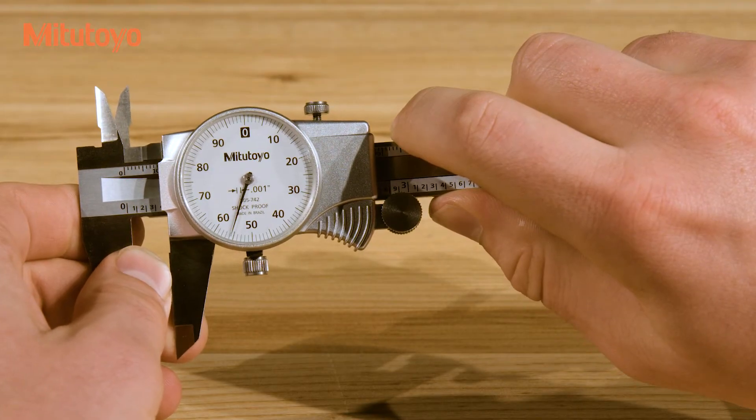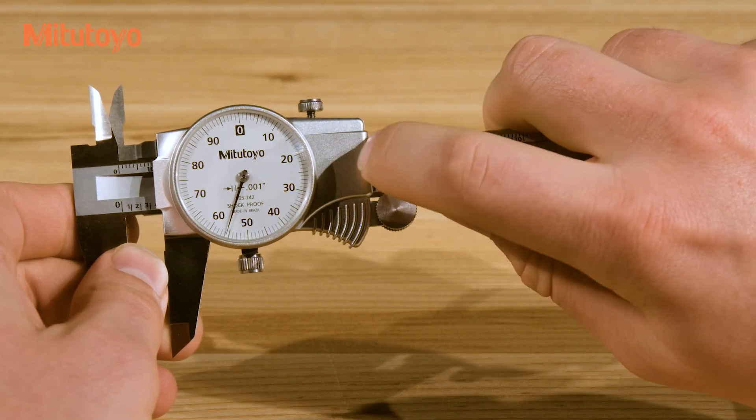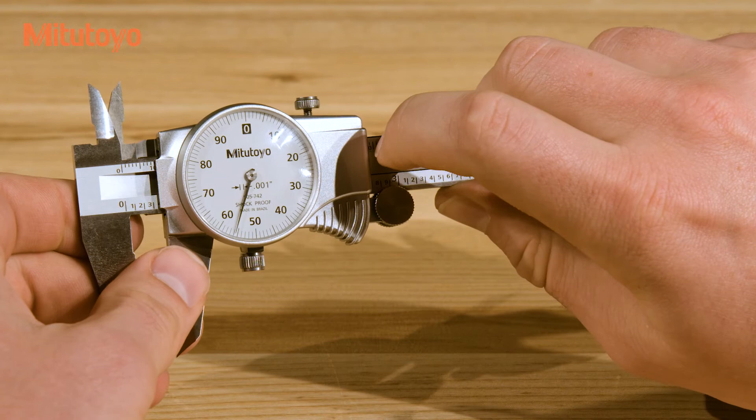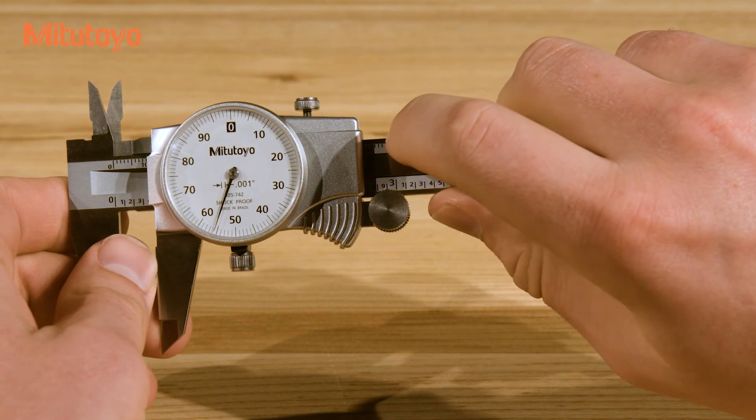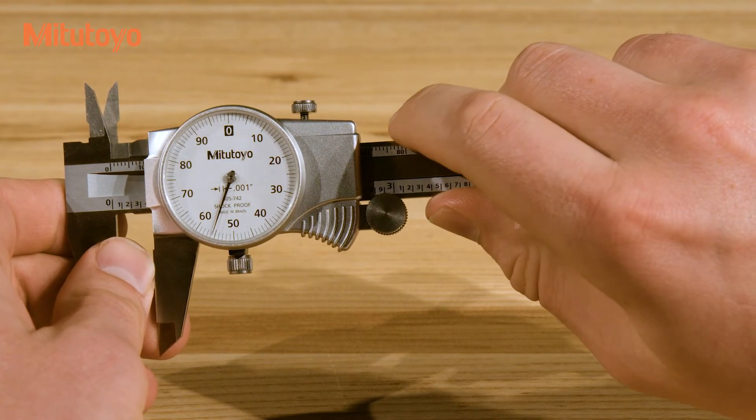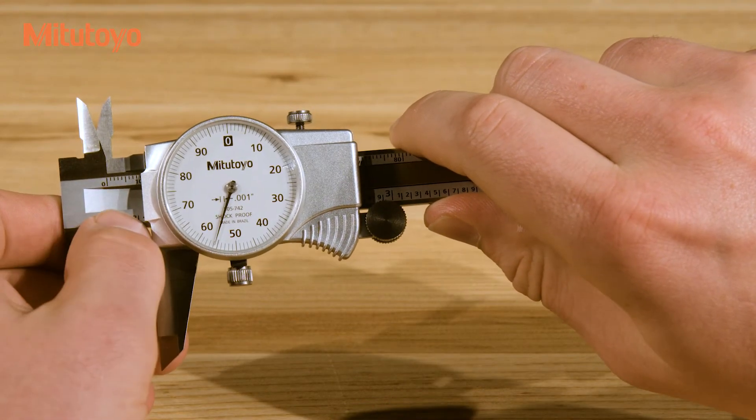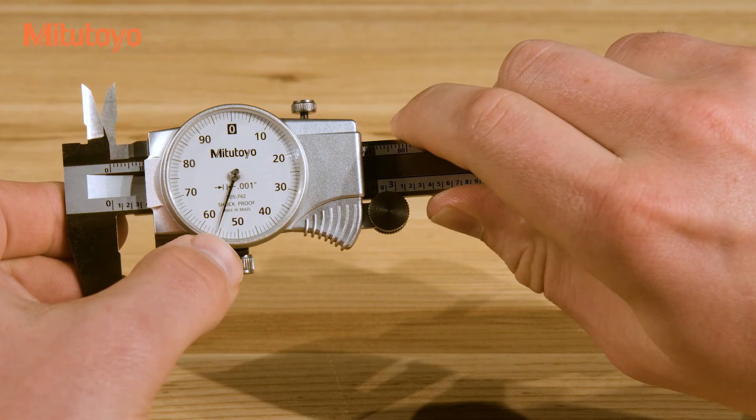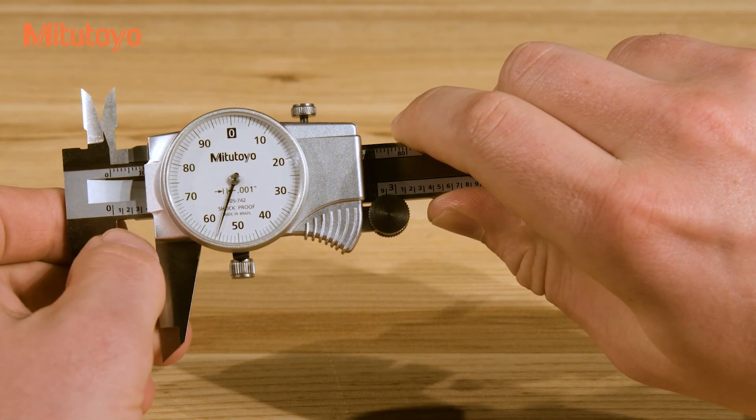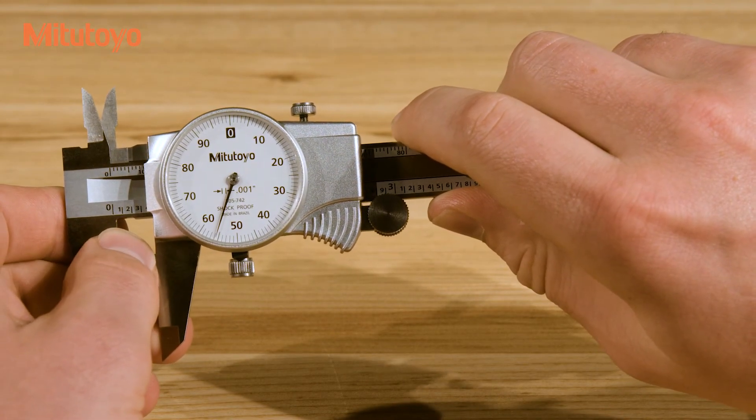Next, look at the dial and determine which number the hand is pointing at. In this case, it's pointed at 56, so that's .056 inches. The final reading is the sum of these two readings, so that's 0.3 and .056 for a final reading of .356 inches.